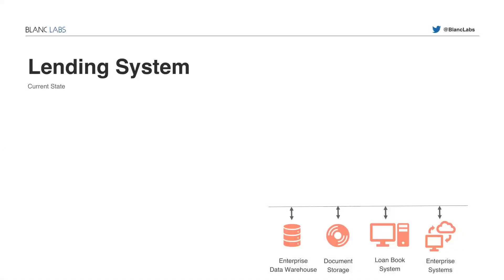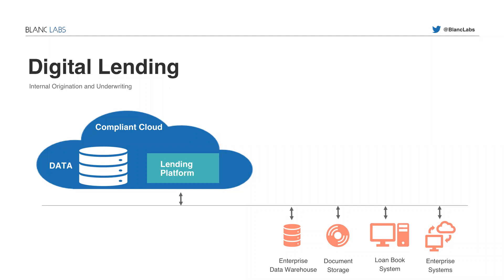In terms of an overview of the infrastructure and how the technological platform would look, lending systems usually start in a current state with a combination of enterprise data warehouse, document storage, the loan book of record system, and other enterprise systems being used. When going through this transformation journey, what's very important is to get to something based on a lending platform that comes on top of the existing infrastructure, wrapped around a compliant cloud — public or private depending on the organization's technological maturity — that covers the lending platform and its data, with everything sitting on top of the existing infrastructure.